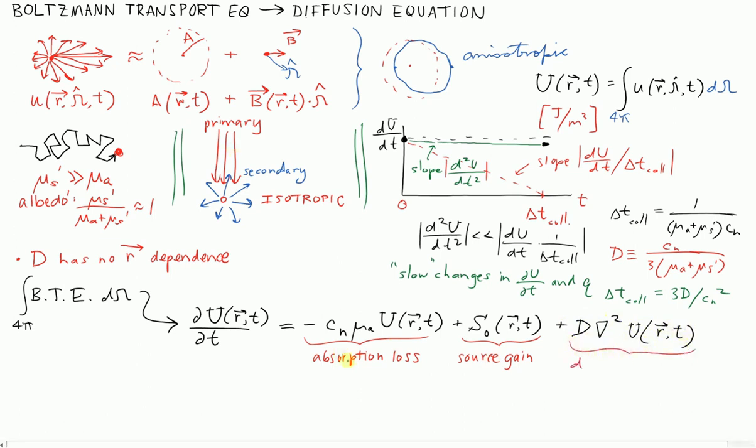Unlike absorption, which is always a loss, and new scattering coming from the primary beam, which is always a gain, this diffusion term could be loss or gain, and it depends on where you are and possibly on what time it is. We'll talk about that further in class. But this term, unlike the others, isn't automatically loss or gain. It will depend on that.